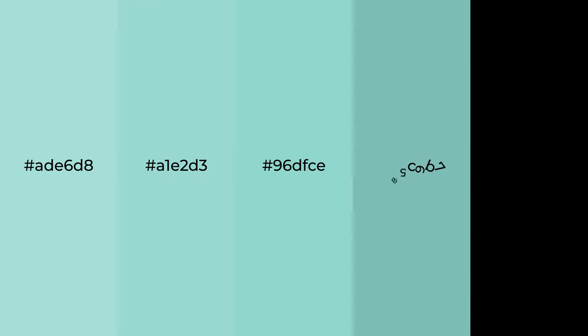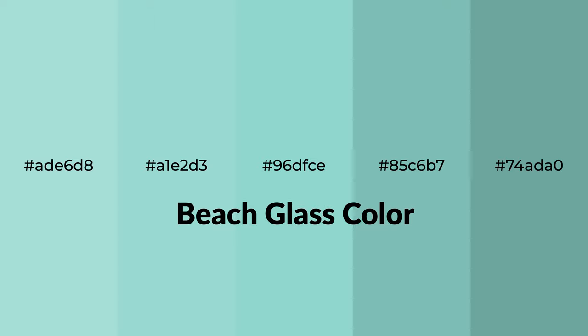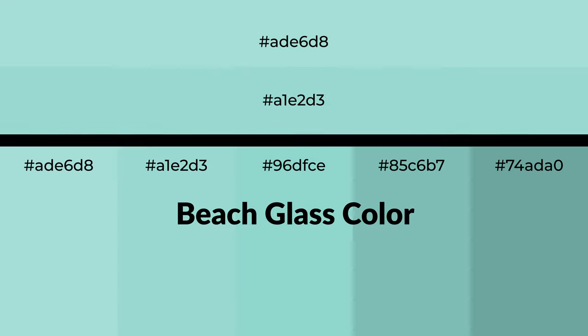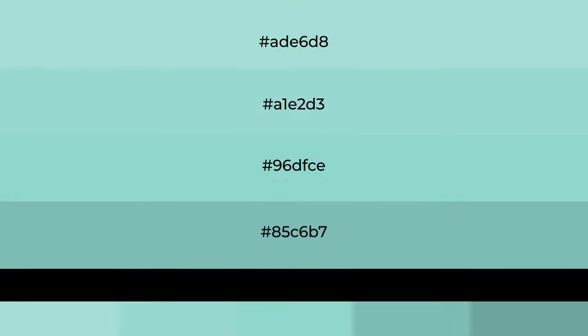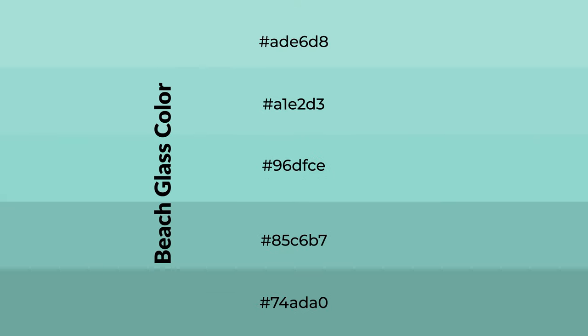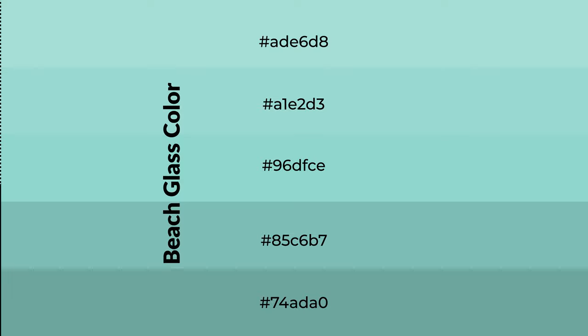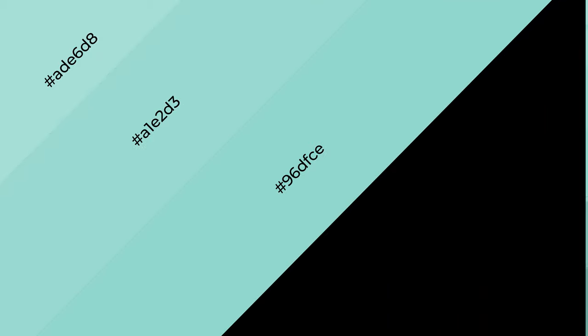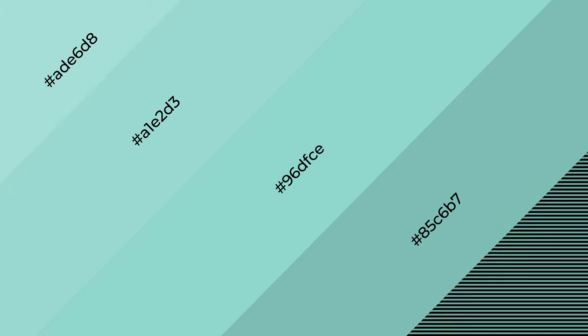Cool shades of beach glass color with green hue for your next project. To generate tints of a color, we add white to the color. Tints create light and exquisite emotions. To generate shades of a color, we add black to the color. Shades are used in patterns, 3D effects, and layers — they create depth and drama.